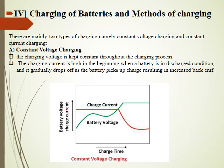Let us look at the charging methods used for charging a battery. Charging methods are classified into two basic categories: constant voltage charging and constant current charging. In constant voltage charging, a voltage of fixed magnitude is applied across the battery terminals. When charging starts, the charging current drawn from the voltage source is initially high since the battery is in a fully discharged condition. Gradually, as the EMF across the discharging battery builds up, the charging current goes on decreasing.